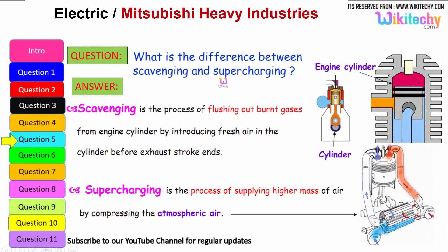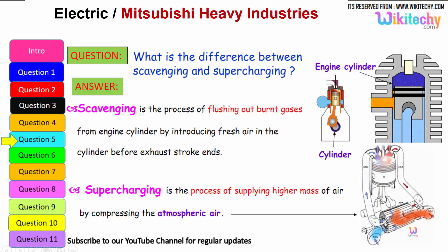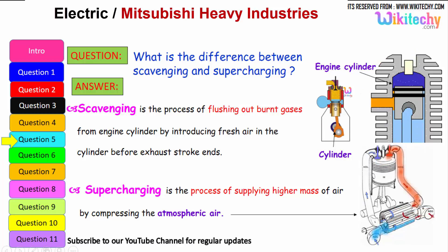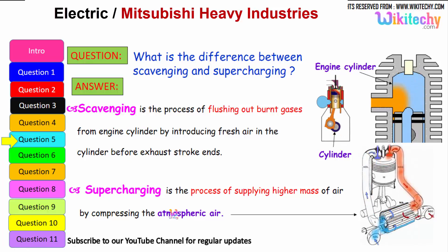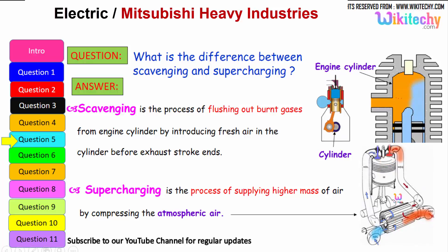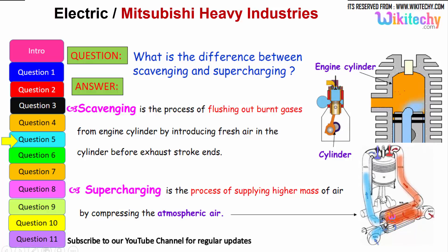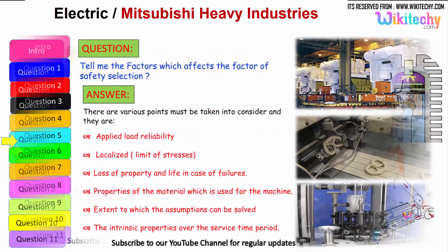What is the difference between scavenging and supercharging? Scavenging is the process of flushing out the burnt gases from the engine cylinder by introducing fresh air before the exhaust stroke ends. Supercharging is the process of supplying high-pressure air by compressing the atmospheric air — a high pressure of air is injected into the cylinder to compress the atmospheric air.